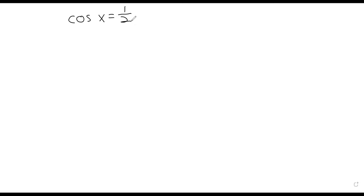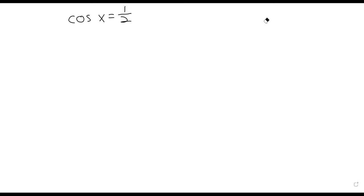So: the cosine of x equals one-half. Often you'll have additional information — like, often you're told x is between zero and two pi. But I'm not going to give you that information, and that means we're going to have infinitely many solutions. The inverse trig functions, or alternatively our knowledge of the cosine, will give us one solution, and then we'll have to figure out what other solutions are.